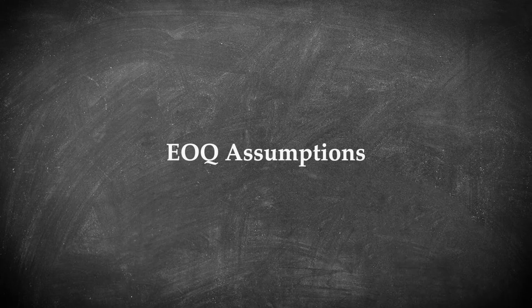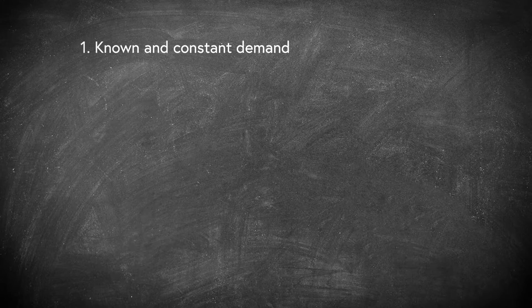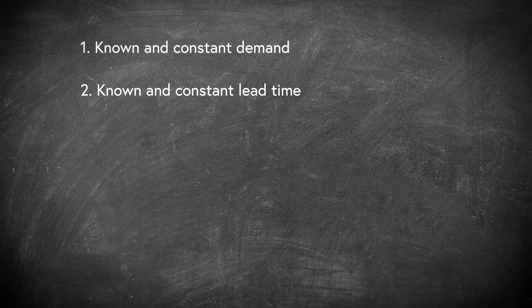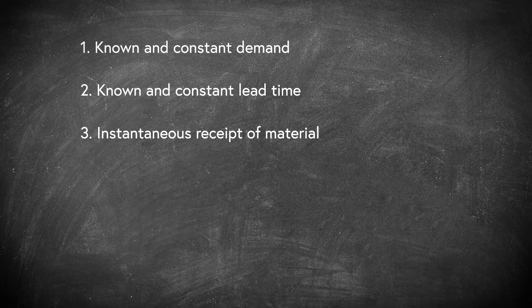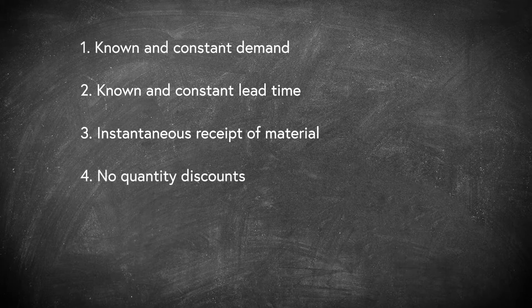Recall that EOQ is a basic reorder level system where one orders a set amount of materials or parts when the reorder point is met. The basic assumptions of the original EOQ model are that we have a known and constant demand and a known and constant lead time. In the simple model we also assume instantaneous receipts of materials from suppliers. We do not allow quantity discounts and assume the prices are constant.